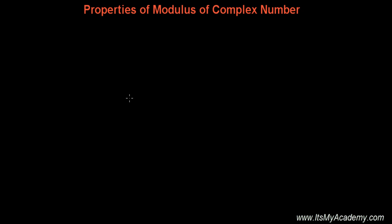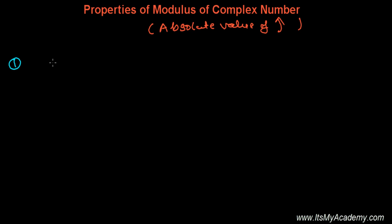After learning the conjugate of complex number and absolute value, or modulus value of complex number, we are ready to learn some properties of modulus of complex number. The first property is that the absolute value of any complex number is equal to the absolute value of the conjugate of that complex number as well.